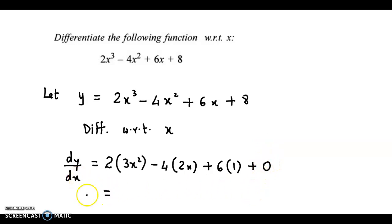Finally we have dy by dx as, now 2 into 3x square, that is 6x square minus 4 into 2x, so that is minus 8x plus 6 into 1 plus 6.